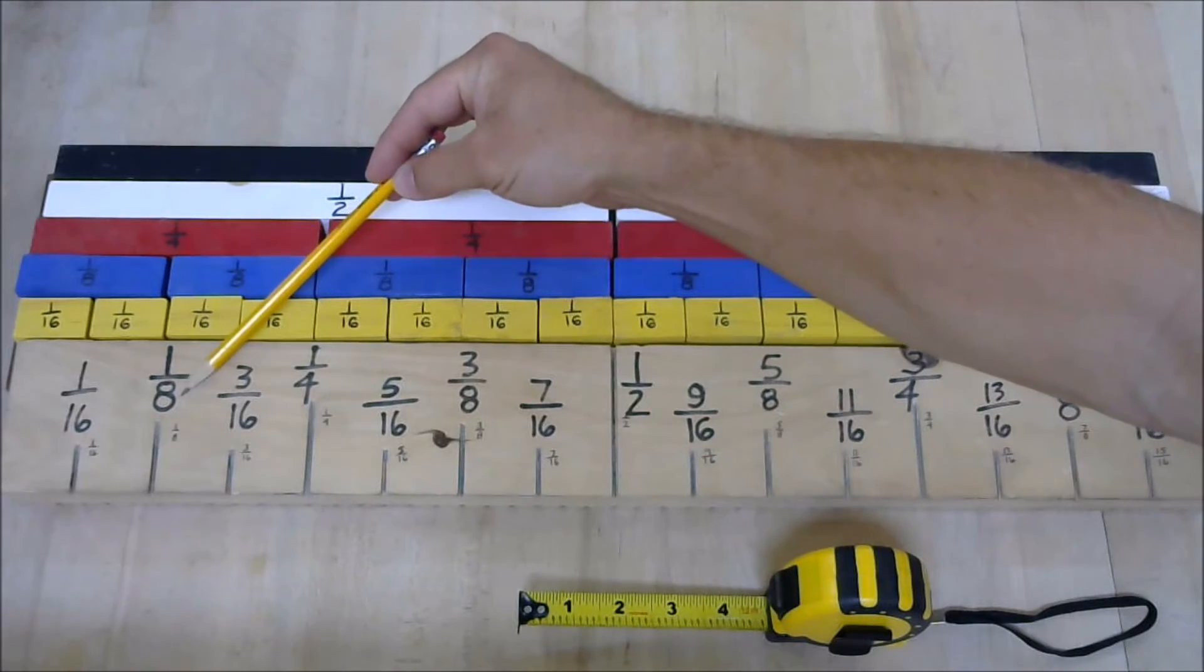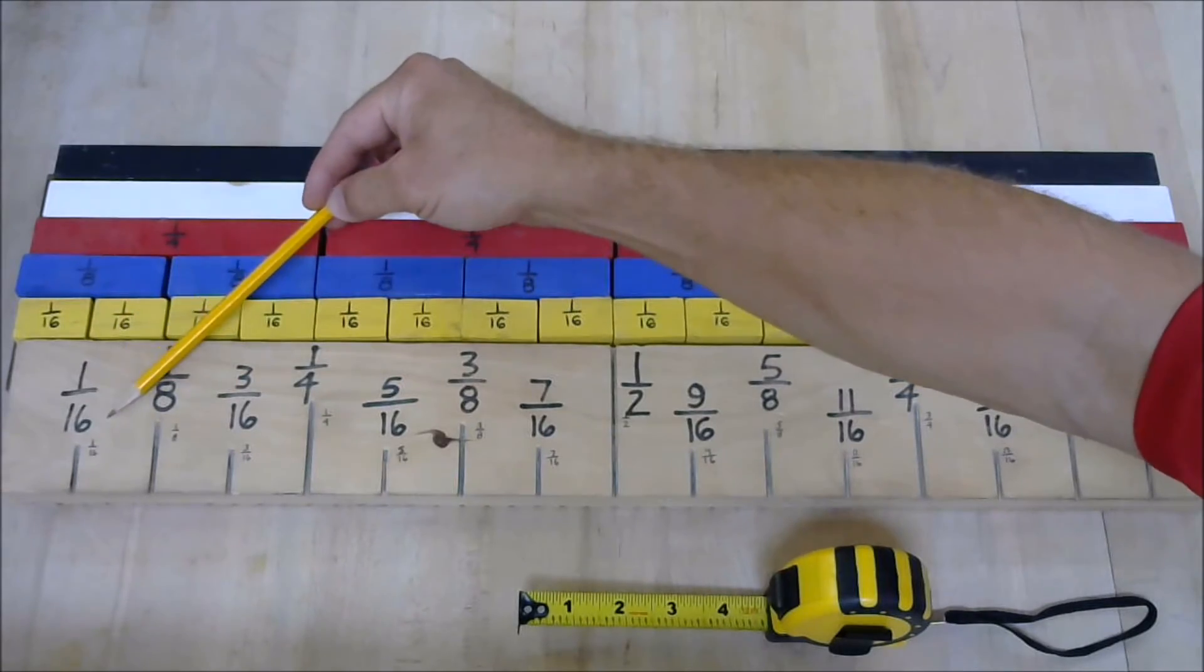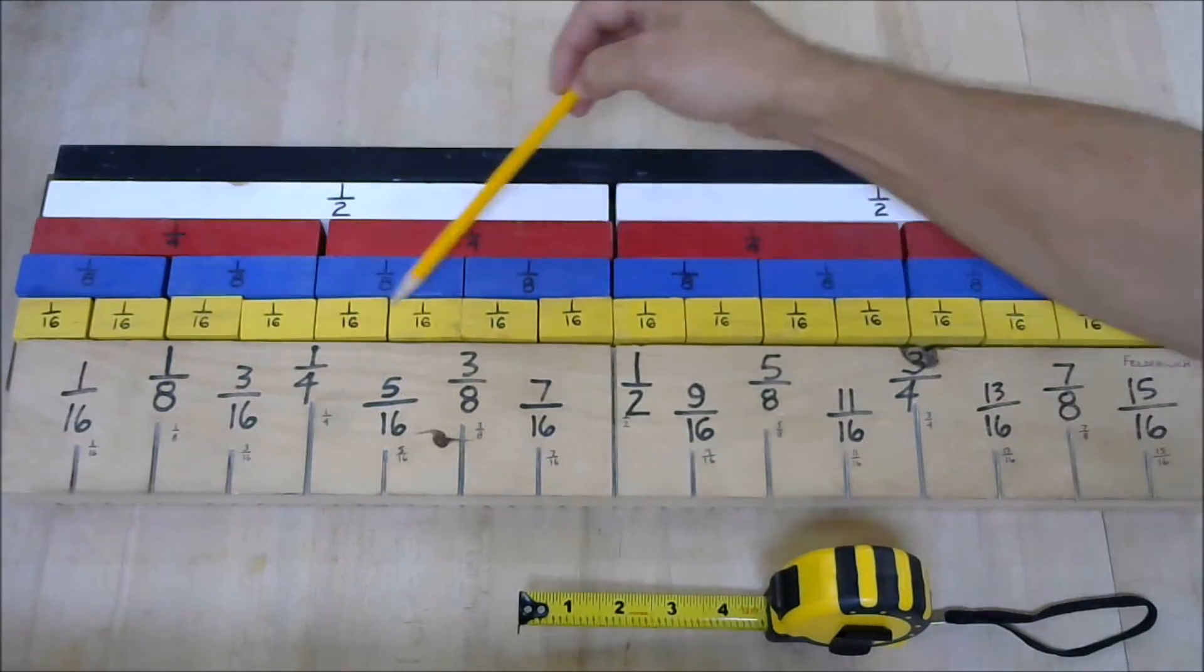If you go to 1 eighth, bottom number is 8. There are 8 parts. 16th, bottom number is 16, 16 parts.